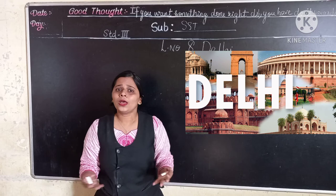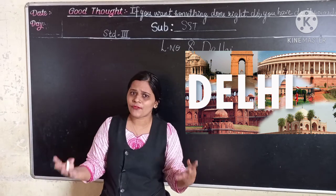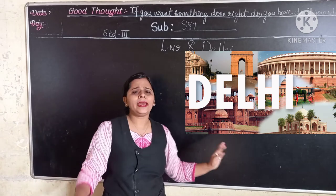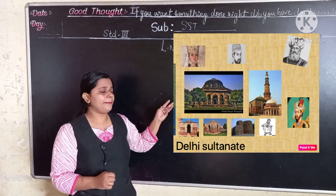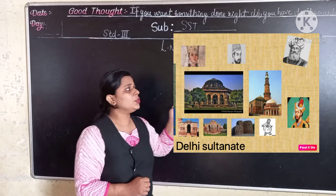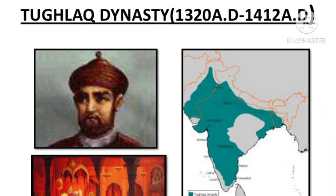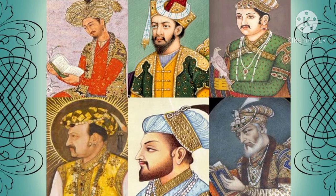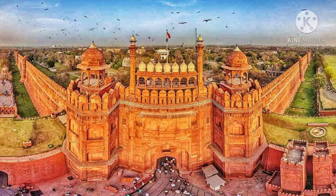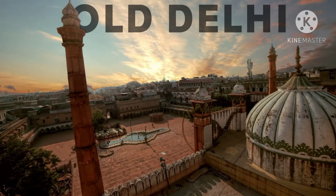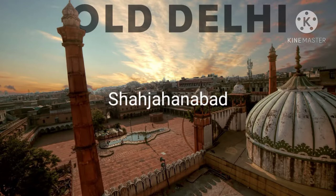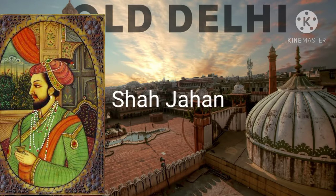After thousands of years, this Delhi was ruled by many kings — for example, the Delhi Sultanate, the Tughlaqs, the Mughal Emperors, etc. After thousands of years, this Delhi was rebuilt and the city was called Shahjahanabad. And who rebuilt this city? Shahjahan, the Mughal Emperor.